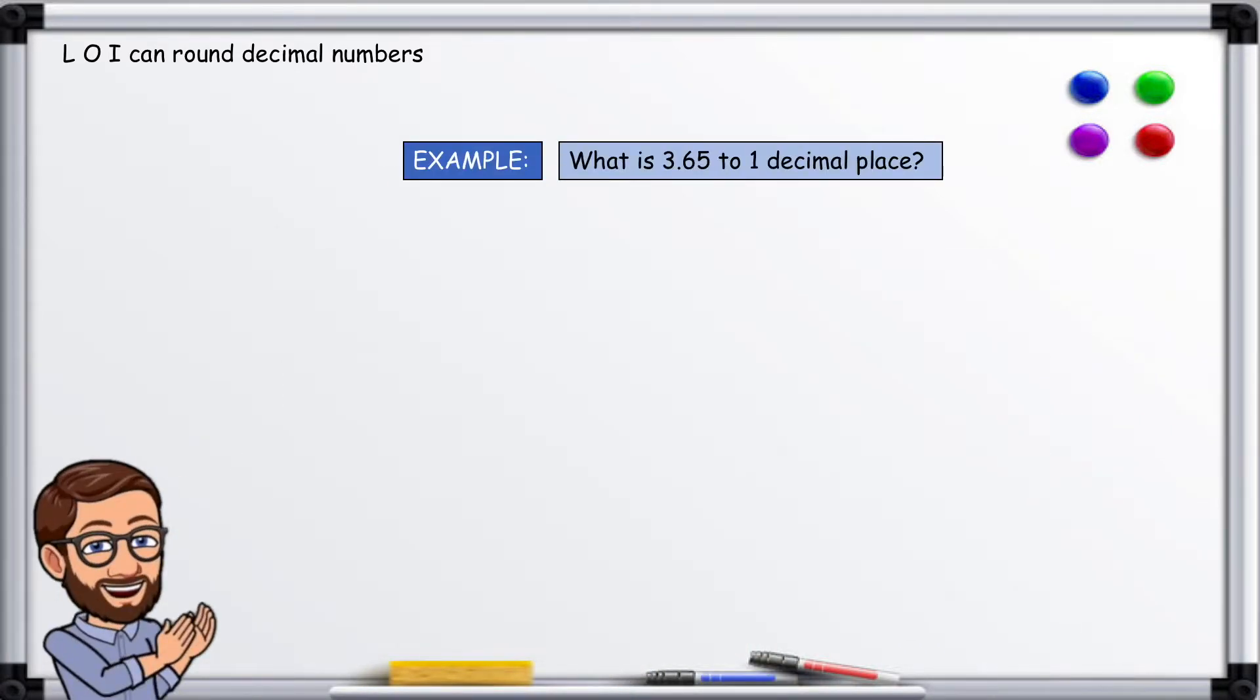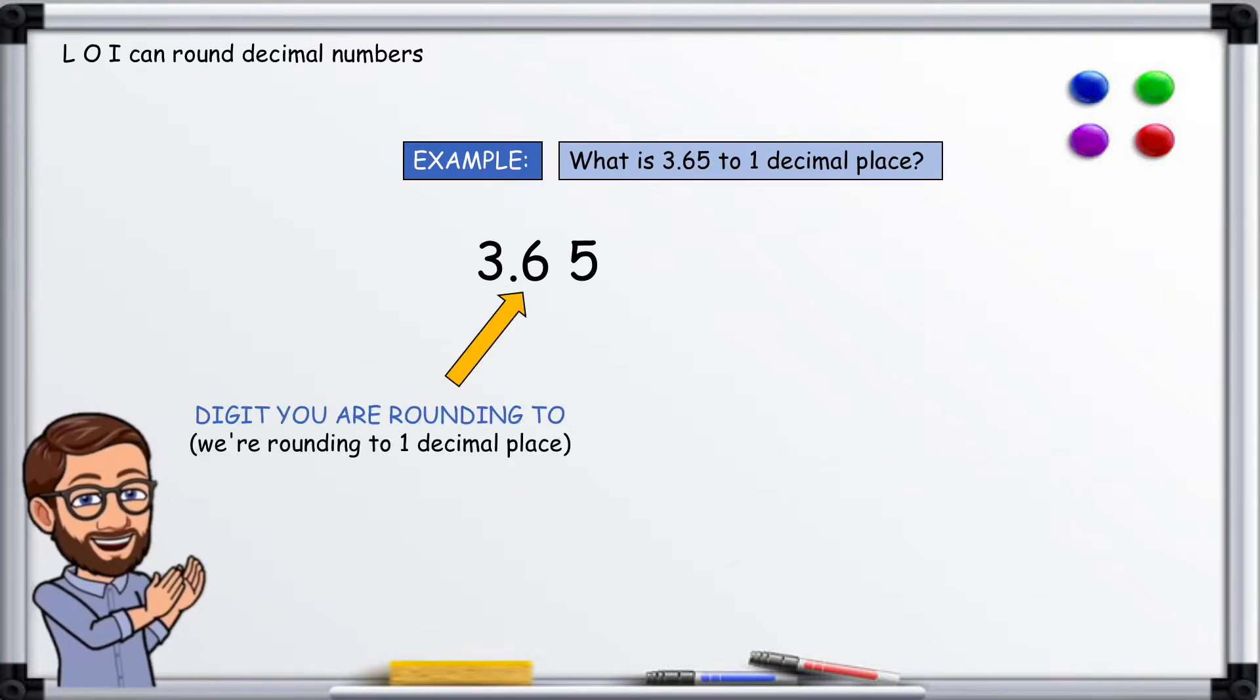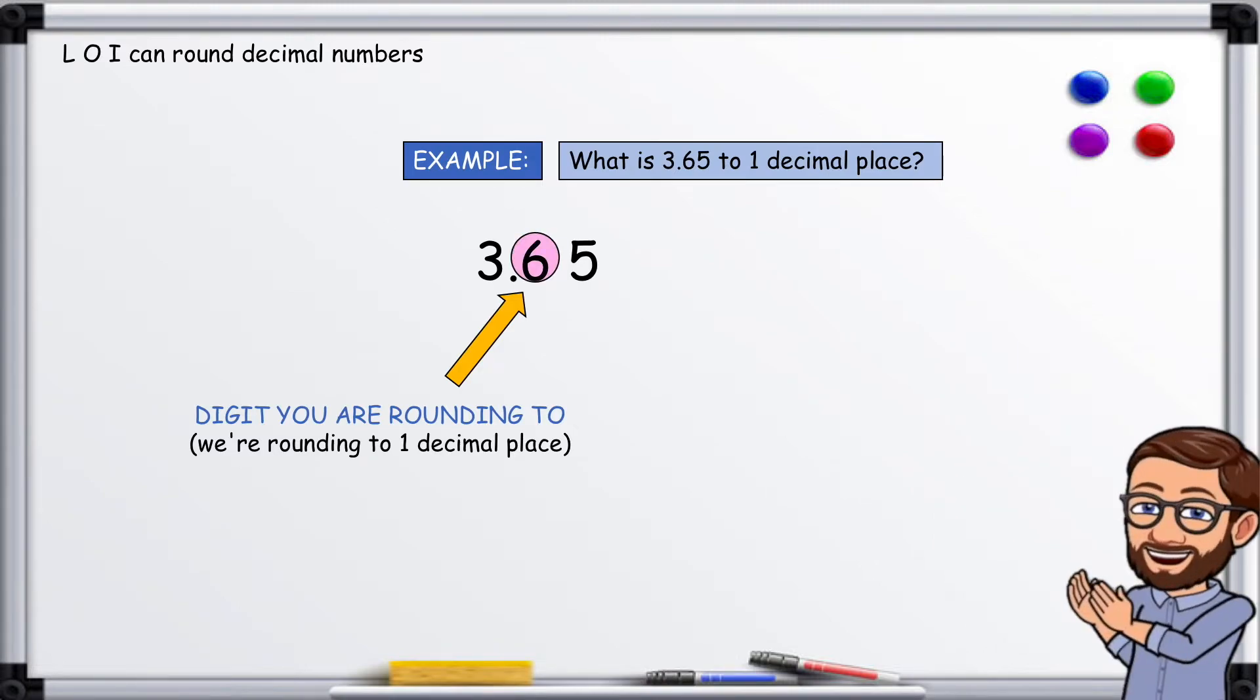What is 3.65 to one decimal place? Here's 3.65. Here's the digit you are rounding to. It is one decimal place. Here's the decider. Now as you can see this is five so we're going to go up. So now the number becomes 3.7. The six rounds up to seven because the decider is five or more.